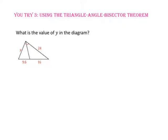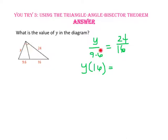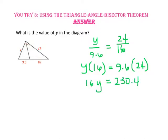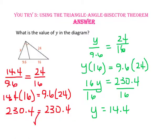Pause the video and do you-try number 3. To find the value of y, let's use the triangle angle bisector theorem to write the proportion: y to 9.6 equals 24 to 16. Using the cross product property, let's multiply the extremes and the means. 16y equals 230.4. Divide both sides by 16 and y equals 14.4. Let's check our answer by substituting 14.4 in for y in our original proportion. Since 230.4 does equal 230.4, we know we are correct.